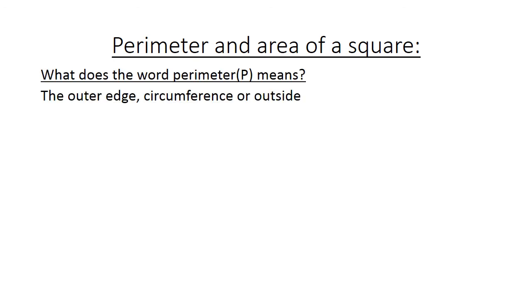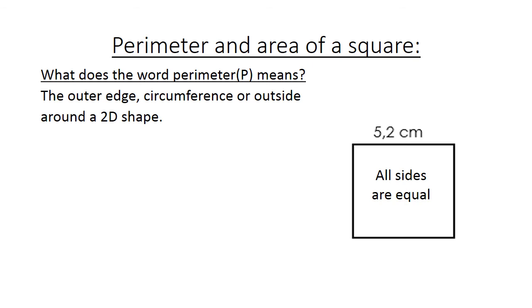Perimeter and area of a square. What does the word perimeter mean? The outer edge, circumference or outside around a 2D shape. Now we are looking at the square. Remember the square, all sides are equal.